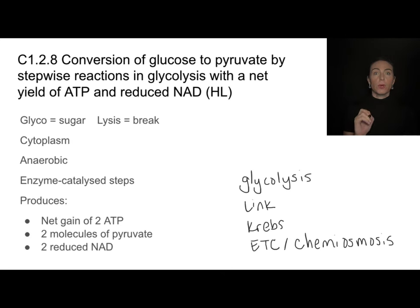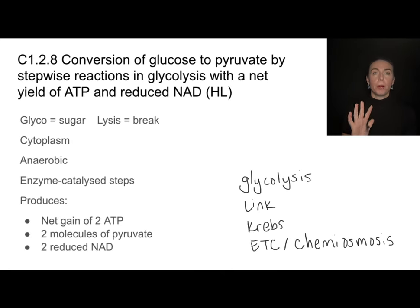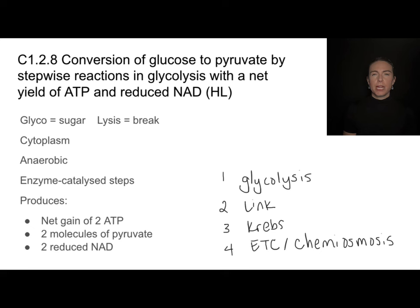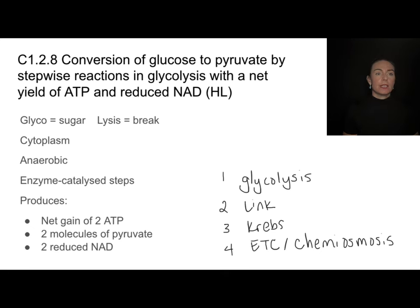In this topic, we're going to take cell respiration and break it down into four major steps. Those will be glycolysis, the link reaction, the Krebs cycle, and the electron transport chain, which goes along with chemiosmosis. Let's first talk about the glycolysis step.